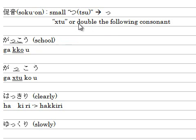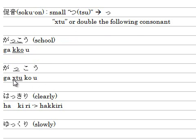Let me show you an example. Let's start with がっこう. が is G-A, then small っ is X-T-U, and こ is K-O, and う is U.